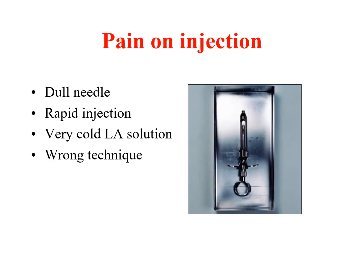Next is pain on injection. Pain on the injection site is due to a dull or blunt needle, rapid injection, forceful injection of the solution, using cold LA solution, or wrong technique. Prevention: always counter-check if the needle is blunt or not. Never inject the solution rapidly — inject slowly; for one cartridge take a minimum of one to two minutes. Counter-check if the solution is cold, and always use the correct technique.